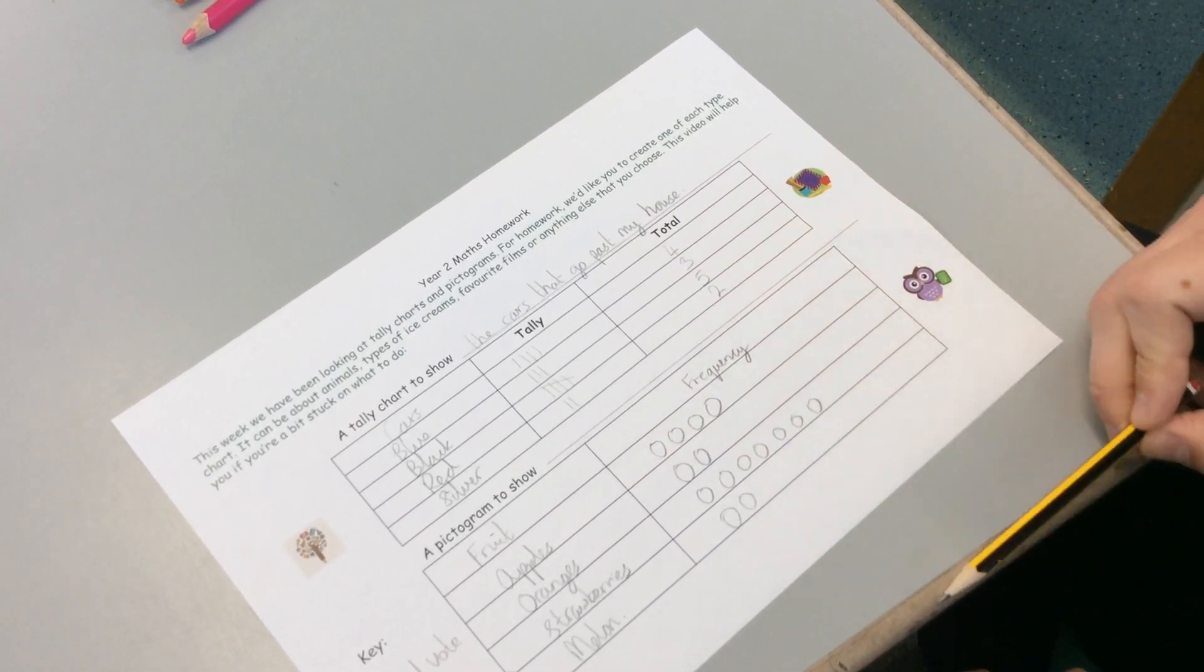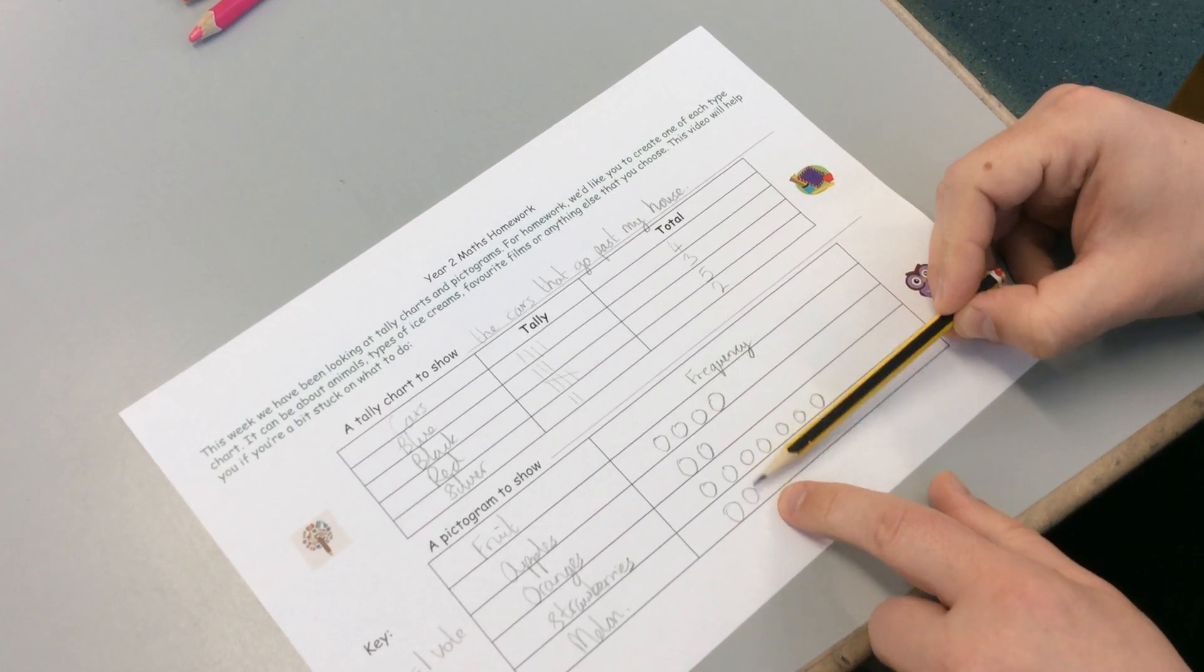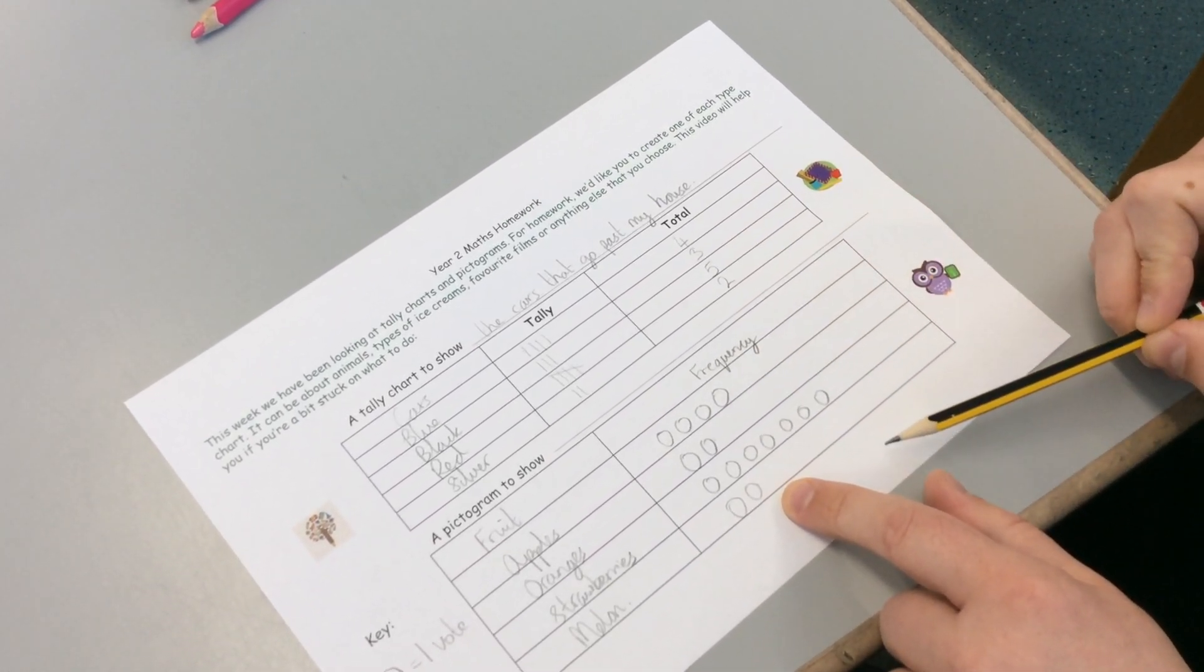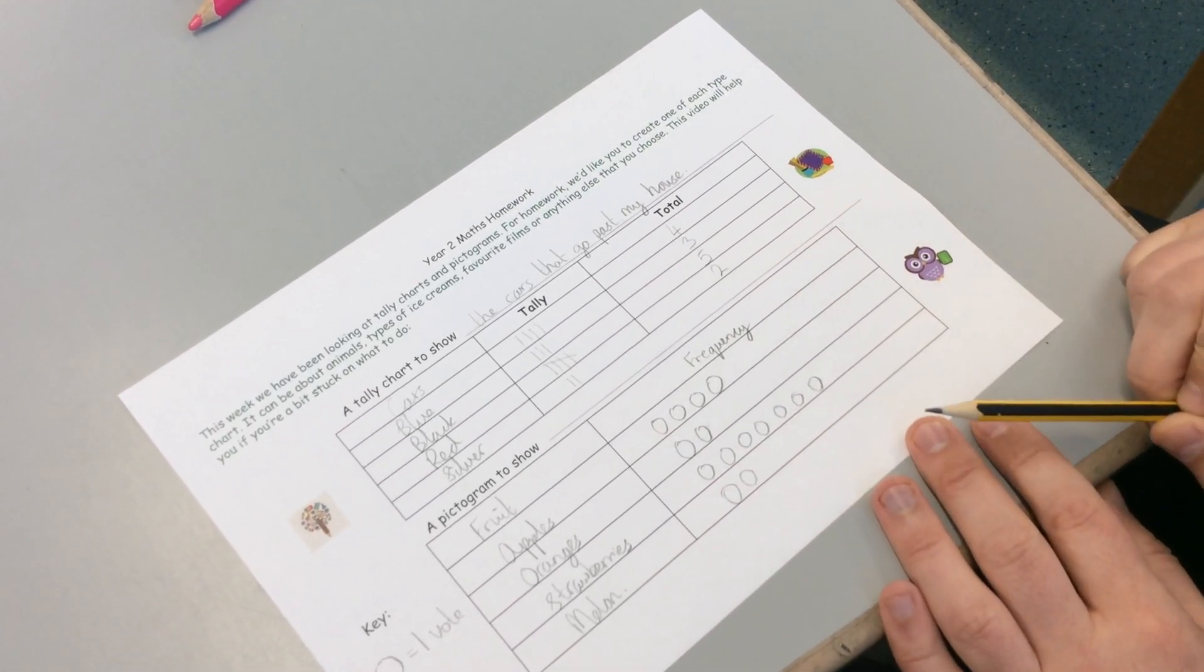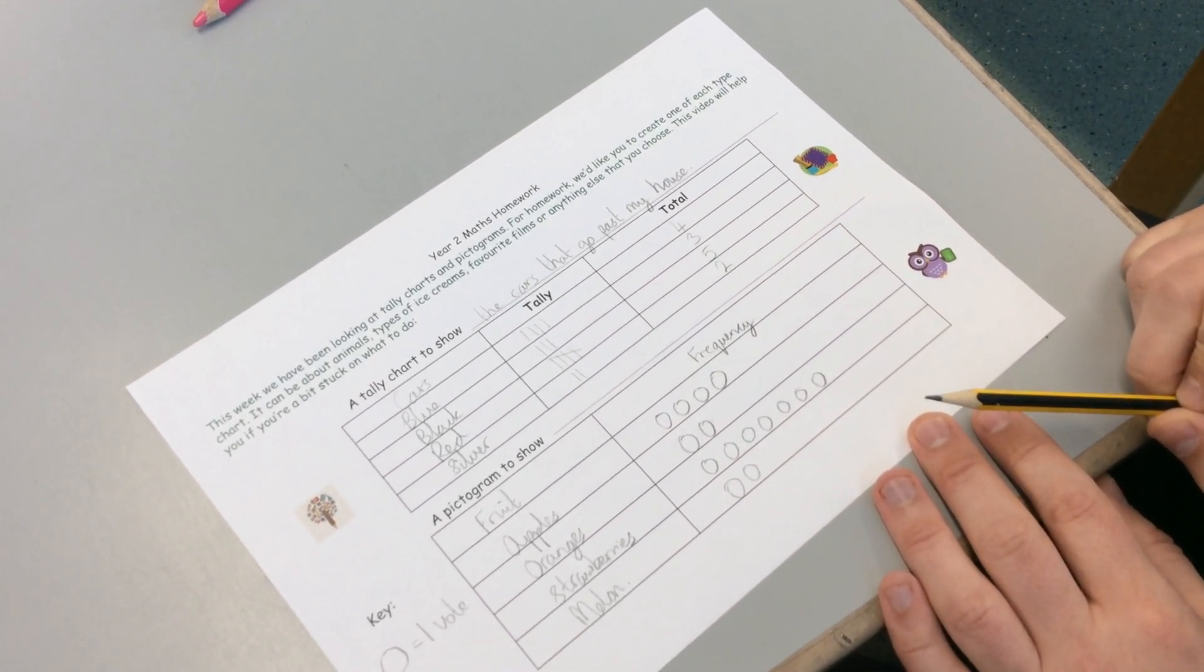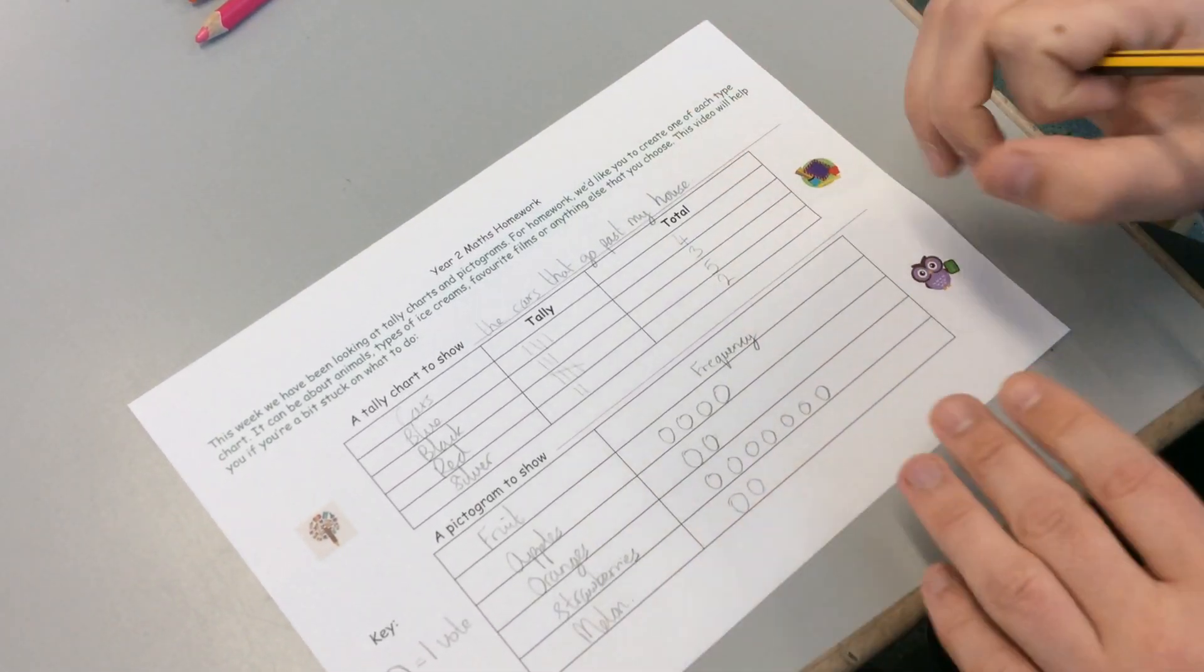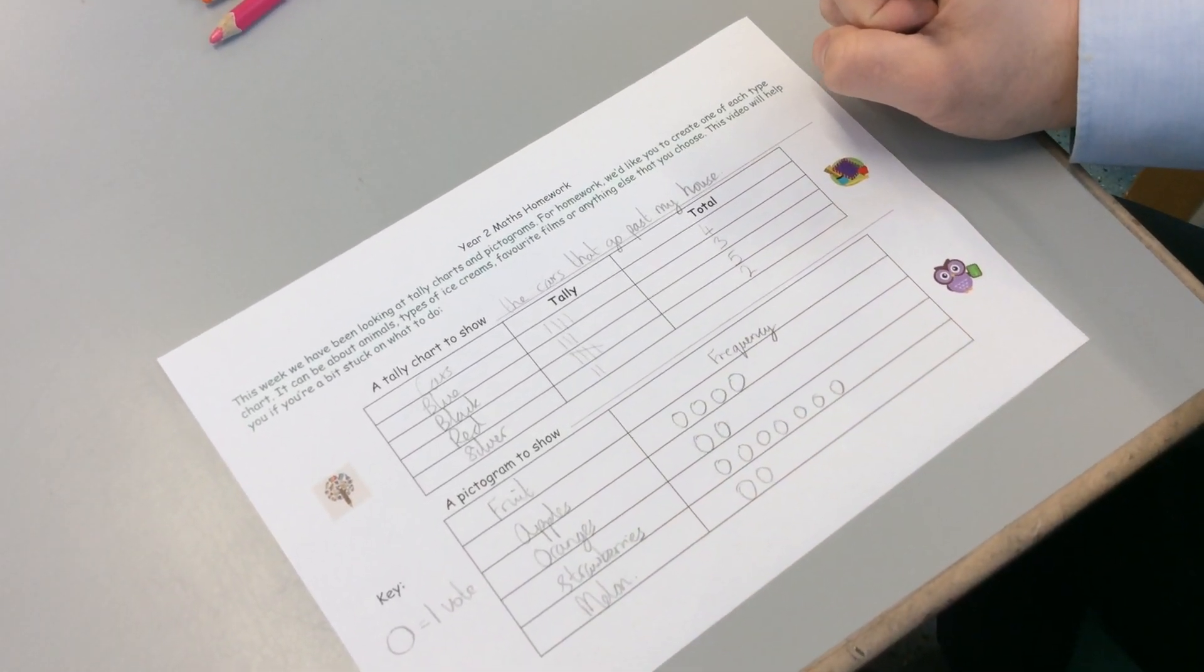together, oranges and melon had four votes. Or I could say the melon and the oranges adds up to the same amount as the apples. Or I could do a little true or false one. True or false, apples were the most popular. That's going to be false. Because strawberries are the most popular. And that's how to do the homework. So that's just a little video which we hope will just help to make it a little bit clearer. To show you what to do.